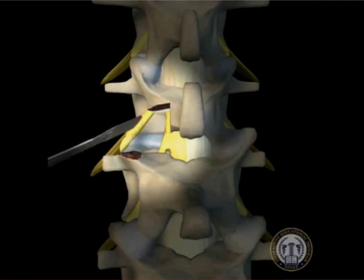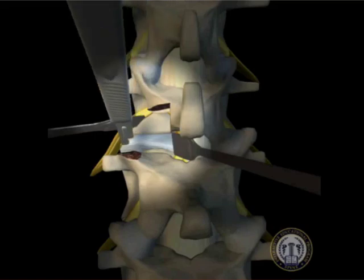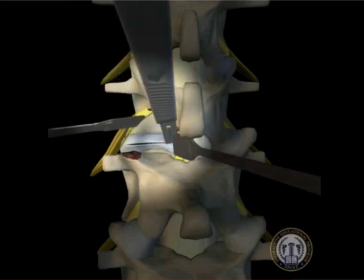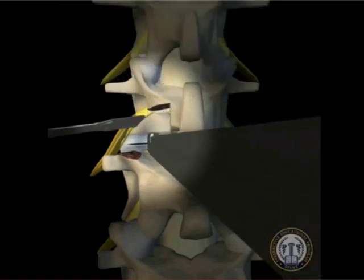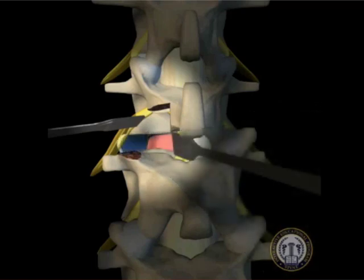With the traversing and exiting nerve roots protected, a complete discectomy is now performed using a number 15 blade to incise the annulus and thoroughly remove all nuclear material. The success of the fusion is dependent on thorough removal of all nuclear tissue, so time should be taken to visualize a complete and thorough discectomy.